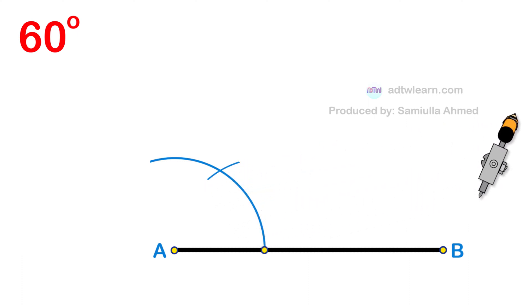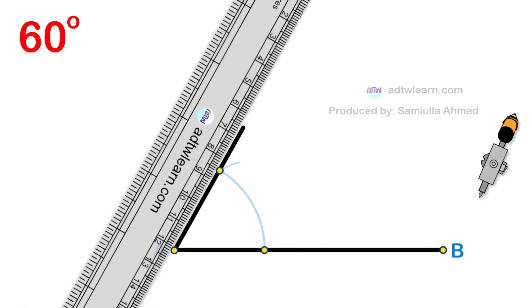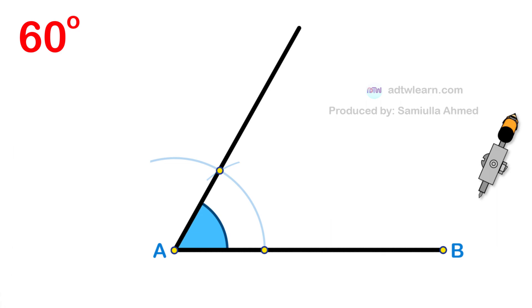Finally, draw a line passing through this intersection point from the endpoint A of the line segment. This forms the required 60 degree angle.